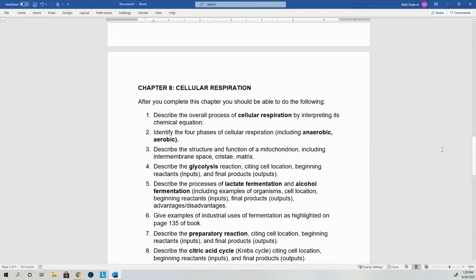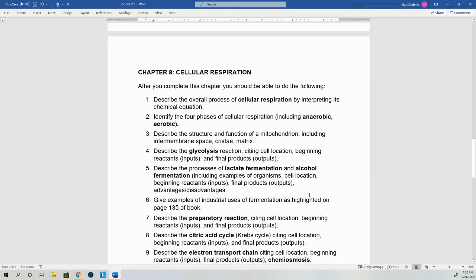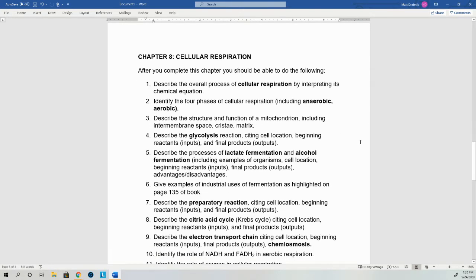Oxygen isn't used until the very end, but we can't get to those three steps unless it's present. Know the function and the structure of the mitochondria. It's our organelle where cellular respiration, the aerobic portions of it take place. The intermembrane space, that's the area between the outer membrane and that inner convoluted folded up membrane. That inner folded membrane is called the cristae. And the matrix is that aqueous solution filling the mitochondria that has all of the parts, all the enzymes, everything else that's needed for cellular respiration.